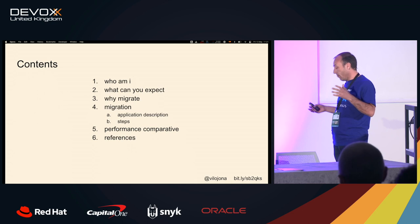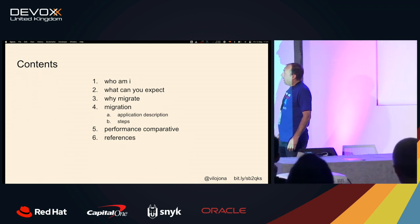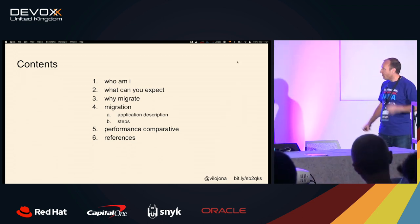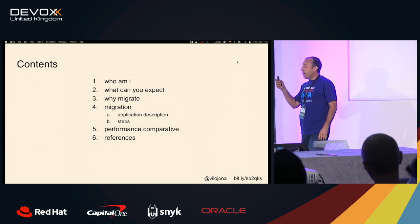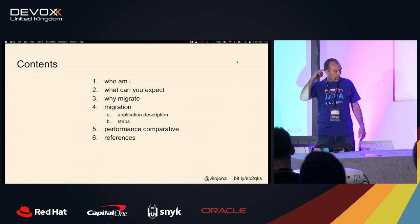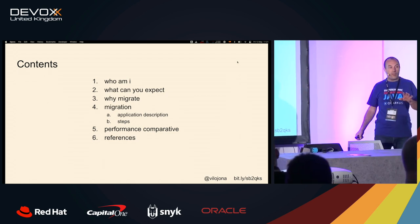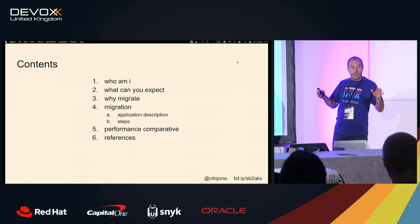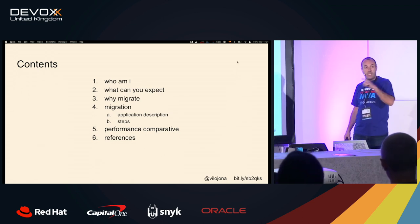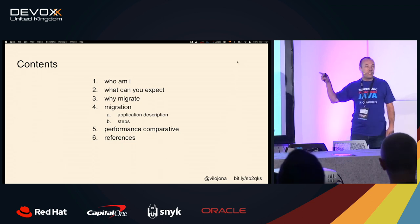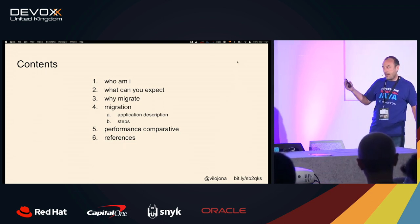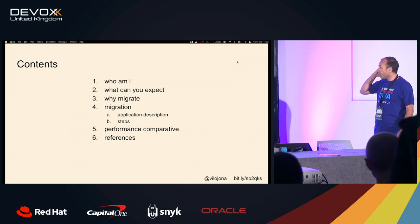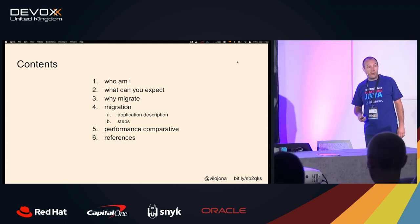This is the agenda of the talk. I will present who I am, and one important point is what you can expect from this talk in order to not have high expectations. Why I decided to do this migration — because, as probably all of you, we have other things to do at home. Then I will simply show which are the steps of the migration. The important part comes at the end: the performance comparison between Spring and Quarkus. And finally, I will give you some references that helped me do this migration, and that I think you can use too.